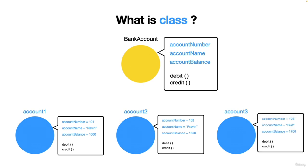The same happens for all further accounts created. The class is a one-time process where we decide how the bank account should be, what properties it will have, and what methods it will have. Later we can create any number of objects from it. Hope everyone new to programming and object-oriented principles clearly understands what a class and an object are. We'll see the implementation using TypeScript in the next lecture.